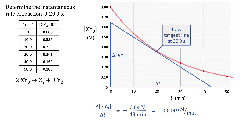Do the math: we get about negative 0.0149 molar per minute. We probably can't estimate beyond two significant digits for our change in x and y values, so we should round this to negative 0.015 molar per minute.